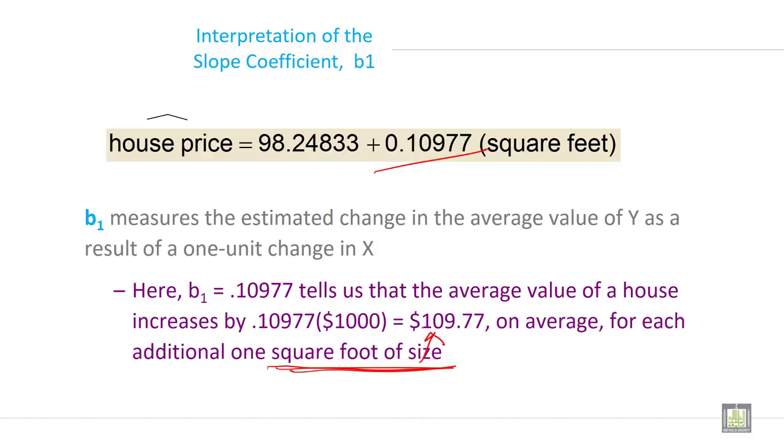It is the square foot contribution to house price. Must remember there are more variables which you have not considered, and the value of b0 is constant. It is independent of the square feet.